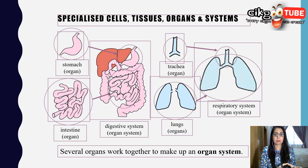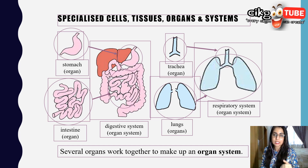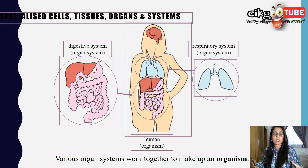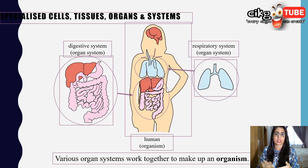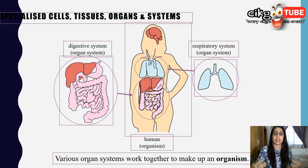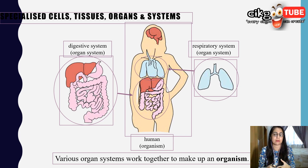Several organs work together to form an organ system. For example, the stomach and intestine form the digestive system, and the trachea and lungs form the respiratory system. There are many organs and many systems in our body. Various organ systems — such as the excretory, digestive, respiratory, and circulatory systems — work together to make up a functioning organism. If one system is damaged, the whole coordinated functioning breaks down.